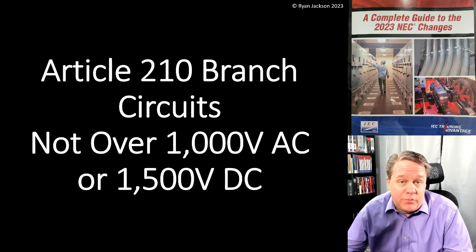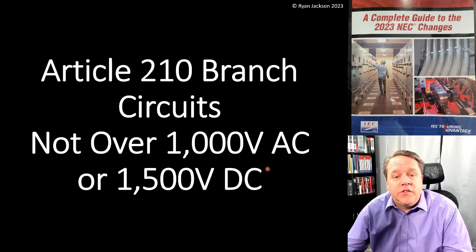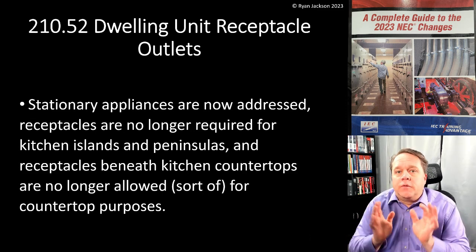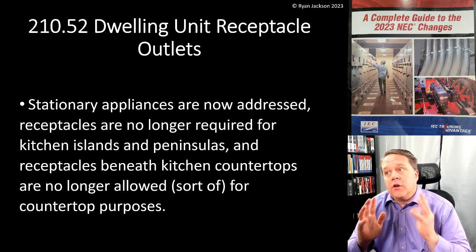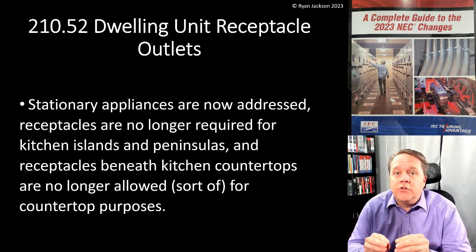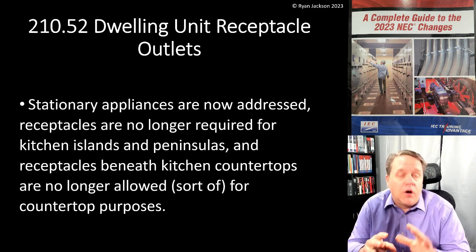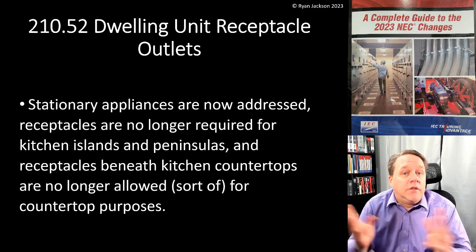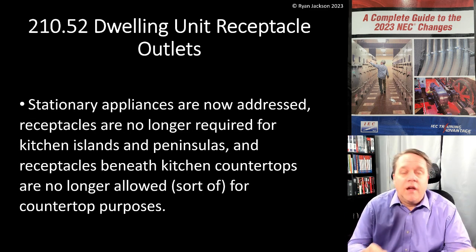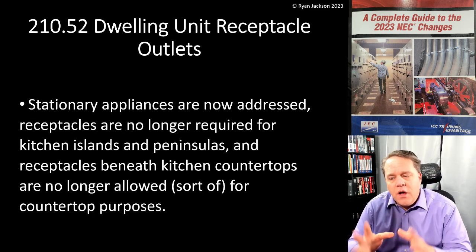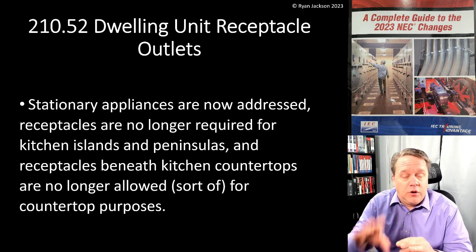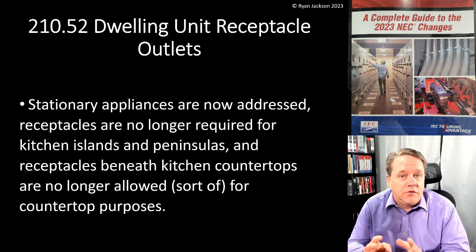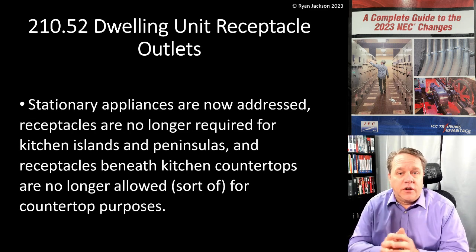Let's keep talking about Article 210, branch circuits up to 1000 volts AC or 1500 volts DC. We're going to get into 210.52, dwelling unit receptacle outlets. I have another video that goes very deep into the kitchen island countertop issue — I'll put a link below. This video will cover everything in 210.52 including 210.52A and some clarifications about island and peninsula receptacle requirements.